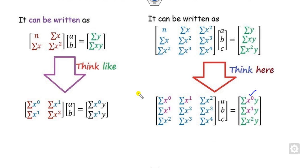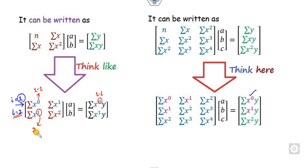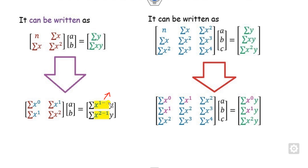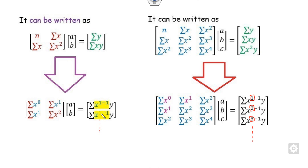When thinking about MATLAB programming, consider this is the first row and this is the second row. How can you write the exponent 0 in terms of row index? You can write it as 1 minus 1. This is the second row, so you can write it as 2 minus 1. For row i and column j, each position can be expressed using i minus 1 and j minus 1 patterns, which lets you generalize across all rows.